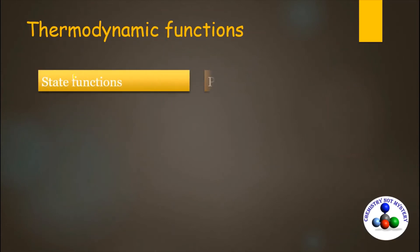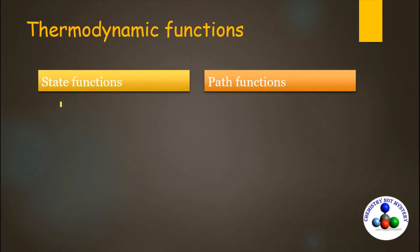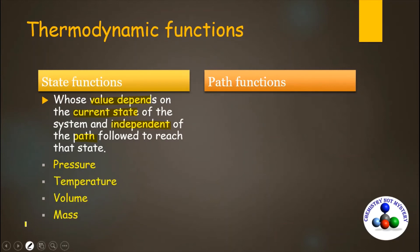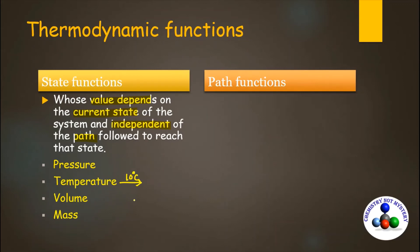Thermodynamic functions are of two types: state functions and path functions. State functions are functions whose value depends only on the current state, not on the path followed to reach that state. For example, temperature, pressure, volume, and mass are all state functions. If you increase the temperature of a system from one value to another, the change in temperature depends only on the initial and final states, not on which path was taken.